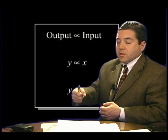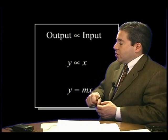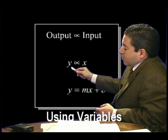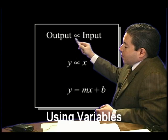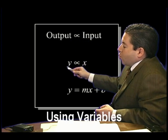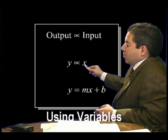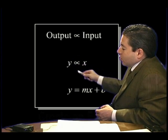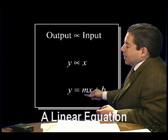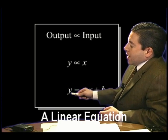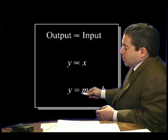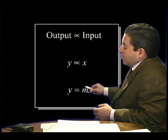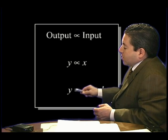Quadruple the force is quadruple the change in position. Of course, we typically don't write equations this way. We use variables such as X and Y, so output being proportional to the input is Y is proportional to X. We can make that proportional relationship into an equality by changing it into a linear equation: Y equals MX plus B, which is a typical way of formulating a linear equation — not the only way, but the way that is important for the MCAT.